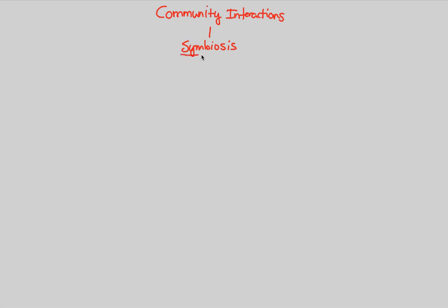Sim means together or the same or with each other, and we're talking about a biological process. Biosis would mean a biological process. Our general definition of symbiosis is an intimate long-term relationship between two or more species.